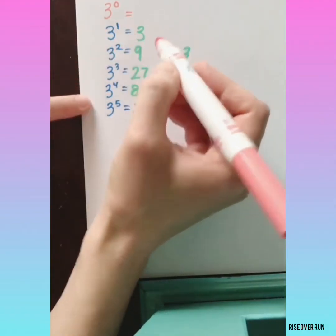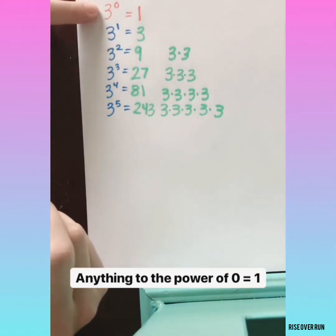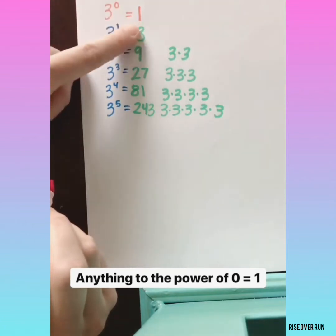3 divided by 3 is 1. That's the first exponent law that we need to remember, anything raised to the power of 0 equals 1.